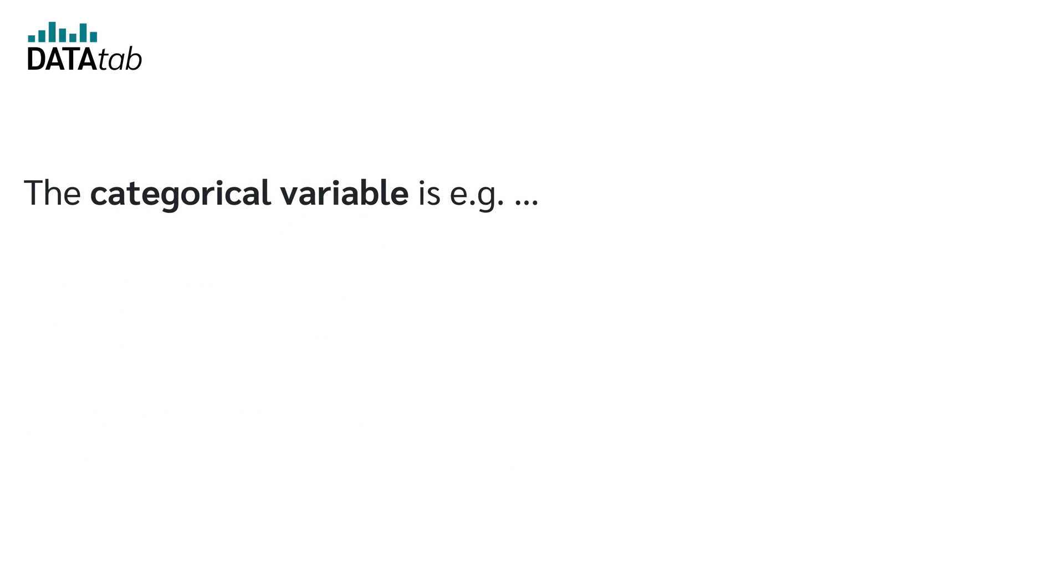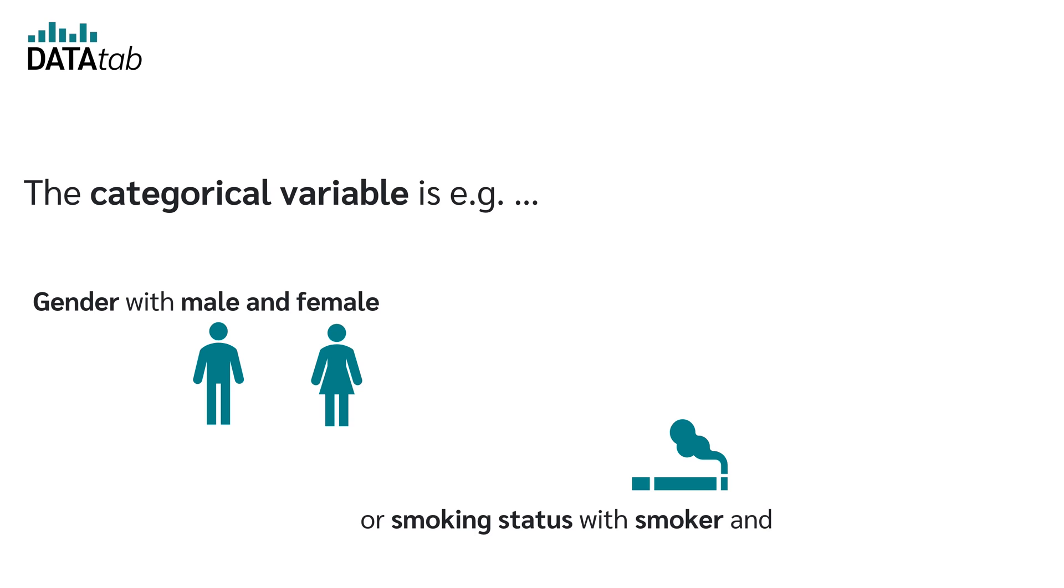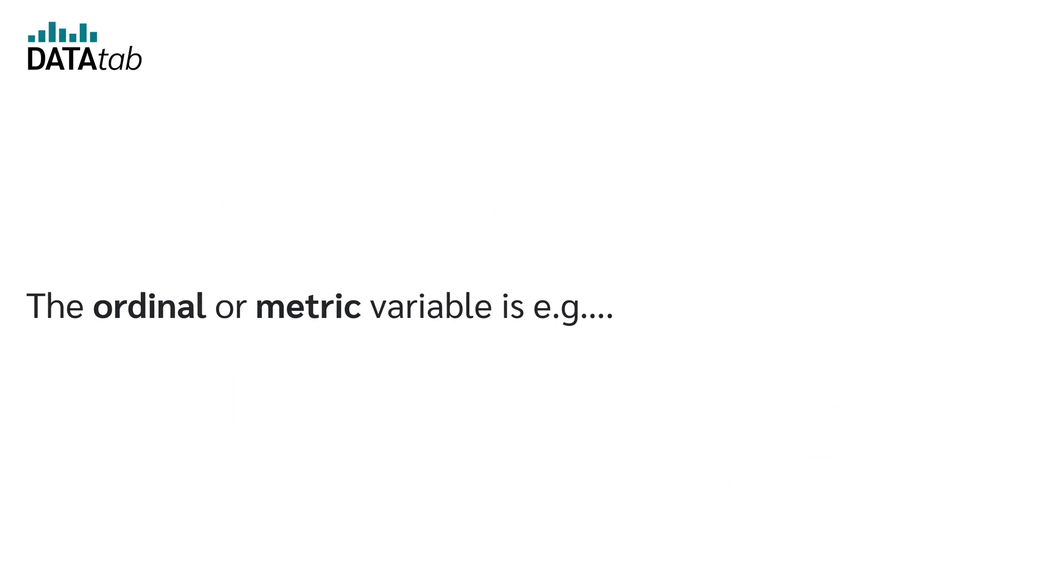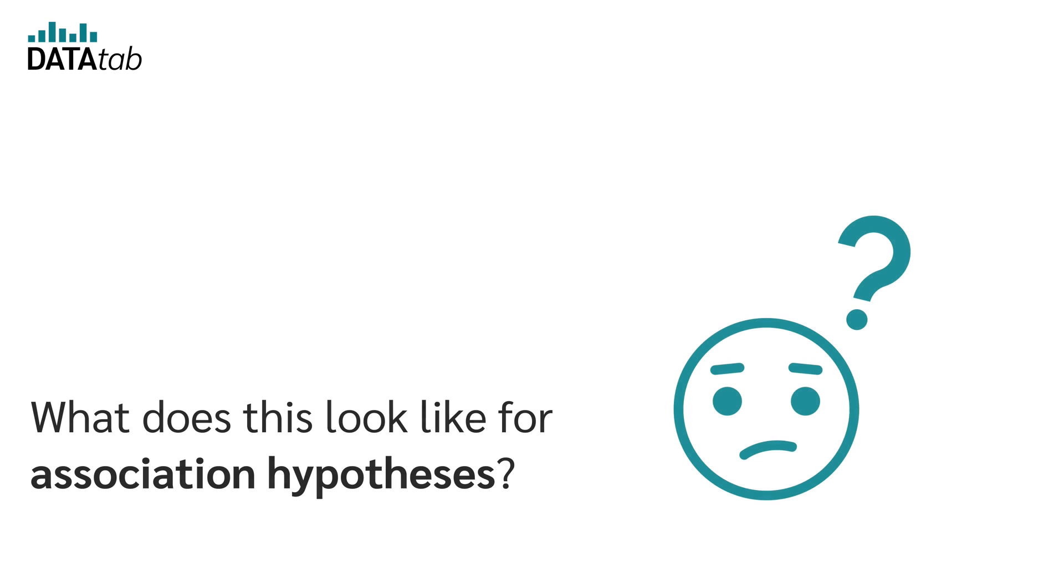The categorical variable is for example gender with male and female or smoking status with smoker and non-smoker. The ordinal or metric variable is for example salary or risk of heart attack. What does this look like for association hypotheses?